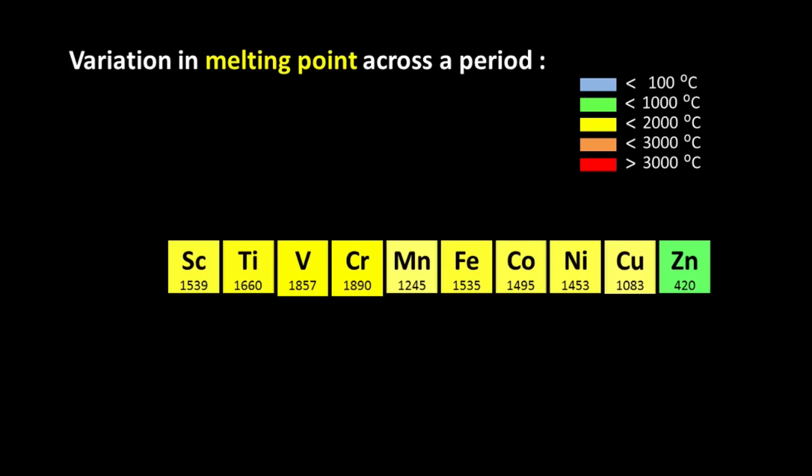So as we move from Scandium, Titanium, Vanadium, Chromium all the way till Zinc, the total number of d-electrons keeps increasing. So you might expect that because Zinc has the highest number of valence electrons, it should have the highest melting point. However, this is not true.